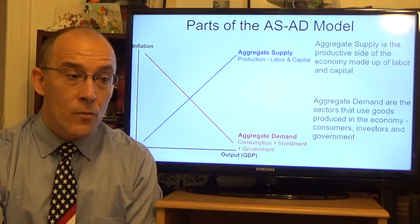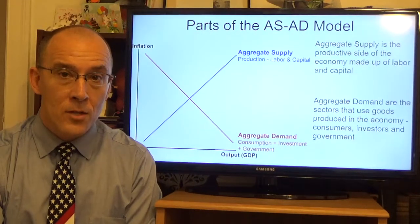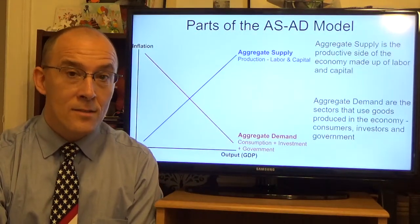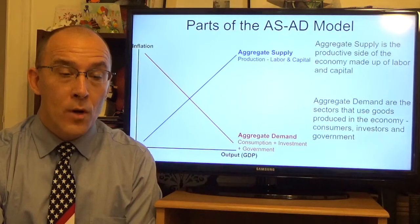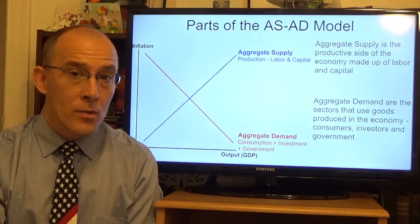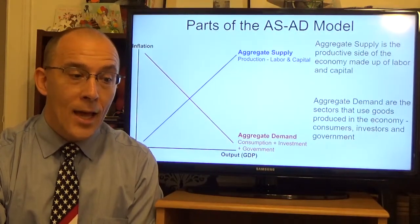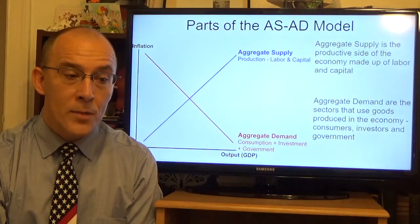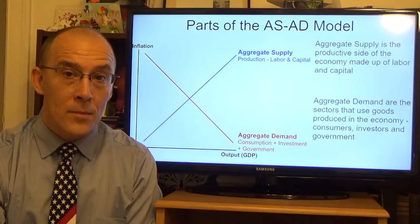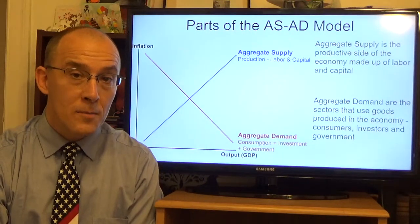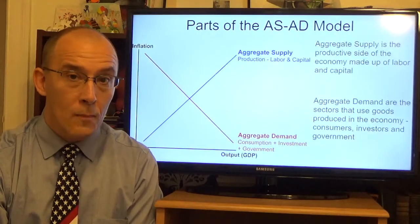The layout of the aggregate supply-aggregate demand model is relatively simple. On the vertical axis is the measure of inflation; on the horizontal axis is the level of real output. The upward-sloping blue line is the aggregate supply curve, representing the productive part of the economy — essentially the labor force and capital used in production. The red downward-sloping aggregate demand curve represents consumption, investment, and government spending in the economy.